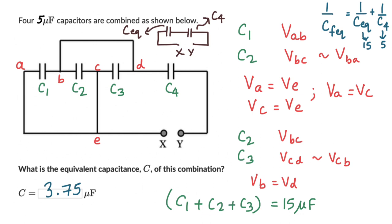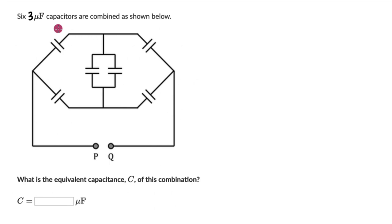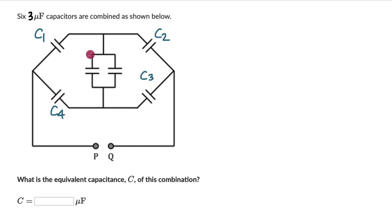Let's look at one more question. Here we have six 3-microfarad capacitors which are combined as shown below, connected across PQ. What is the equivalent capacitance of this entire combination? We will start off by labeling all the capacitors: C1, C2, C3, C4, C5, and C6. And let's label all the nodes: A, B, C, and D. Our approach is again to identify sets of capacitors which are in series or parallel.